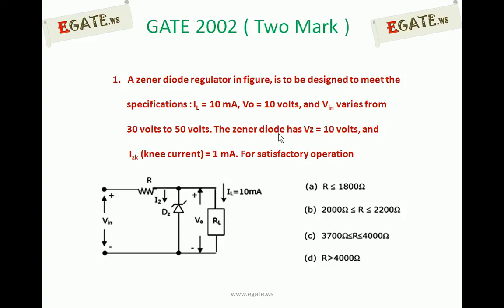The zener diode has zener breakdown voltage of 10V and zener knee current of 1mA. For satisfactory operation, the value of R: (a) R ≤ 1800Ω, (b) 2000Ω ≤ R ≤ 2200Ω, (c) 3700Ω ≤ R ≤ 4000Ω, (d) R > 4000Ω, where R is the series resistance between input and output.